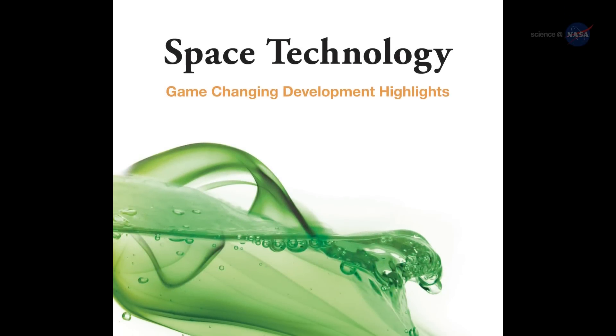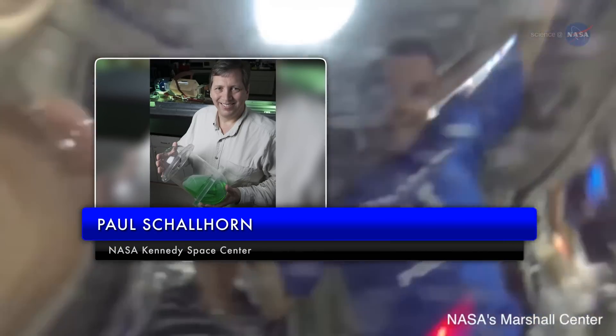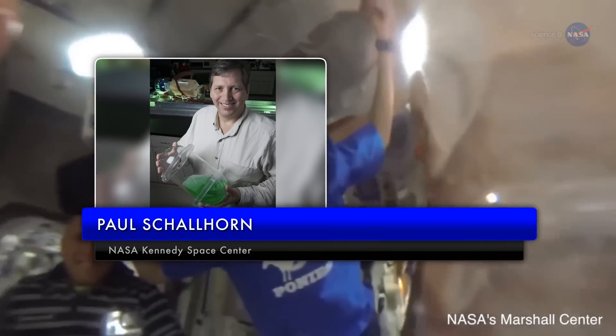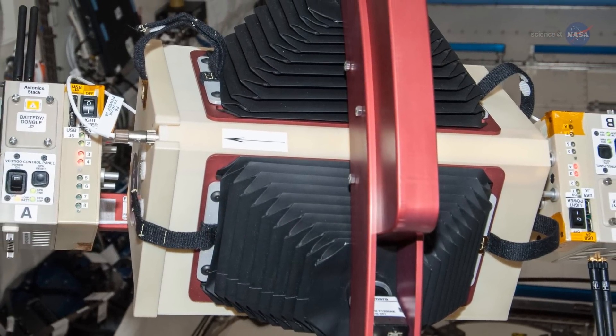Enter the SPHERES SLOSH experiment. The International Space Station provides the perfect environment to conduct liquid behavior studies in microgravity, says the principal investigator Paul Schallhorn, also at Kennedy. So we have designed an experiment that simulates how rocket fuels move around inside their tanks.